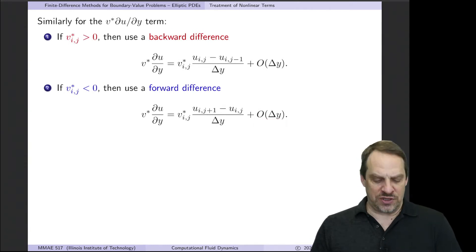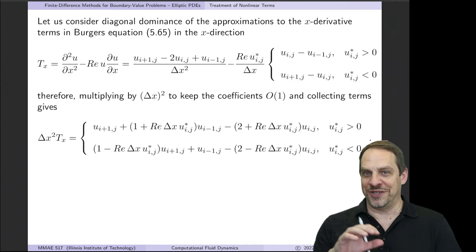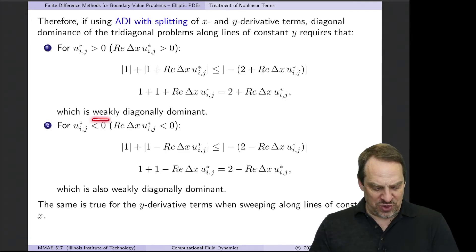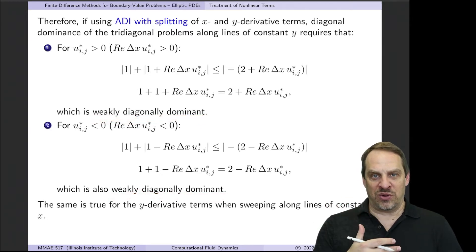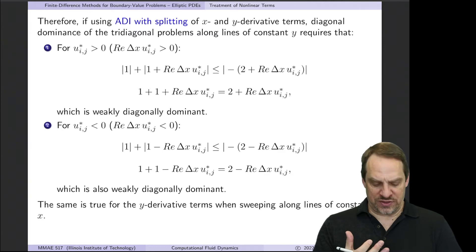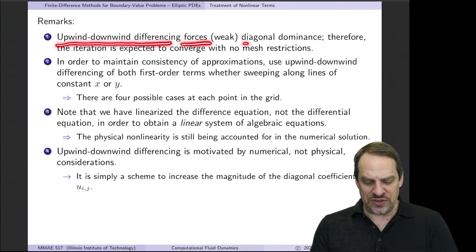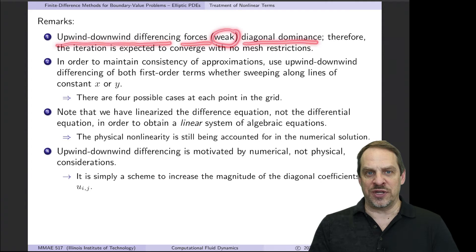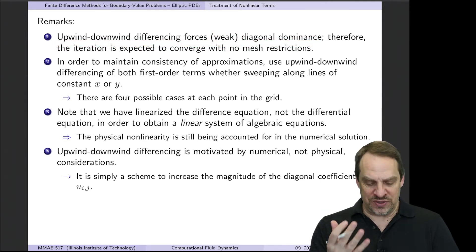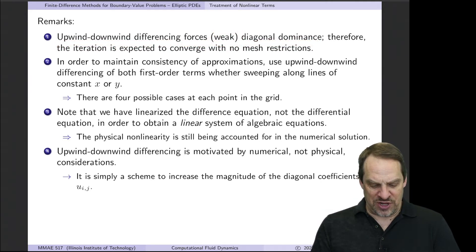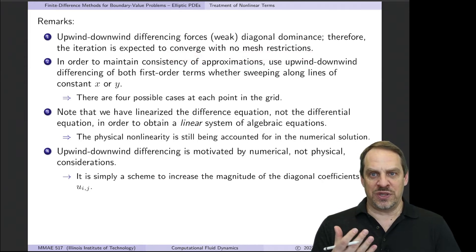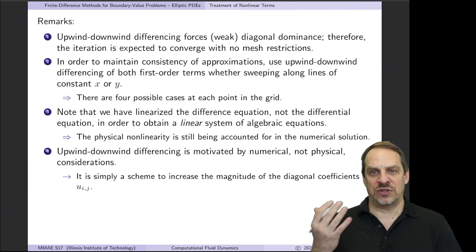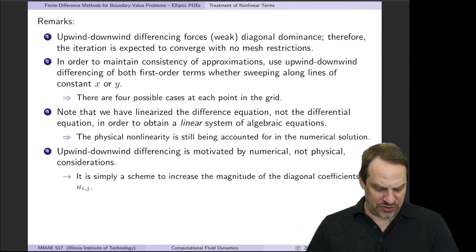Checking diagonal dominance again, using the forward and backward differences appropriately restores the weak diagonal dominance in all cases. The point of upwind-downwind differencing is to force diagonal dominance. It's only weak diagonal dominance, but we have a diagonally dominant system, so there should be no mesh restrictions to ensure convergence — exactly what we had for the Poisson equation, and now for Burger's equation as well.